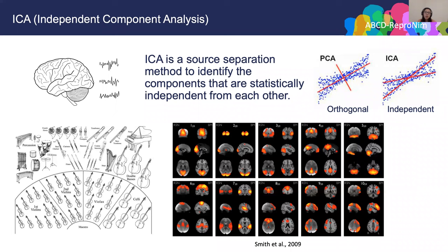Let's start with independent component analysis, ICA. More than 15 years ago, when resting-state fMRI started to arise in neuroimaging, ICA was selected as a method to reduce the dimension of the data and identify brain networks. ICA is a method designed for separating signal sources. Resting-state fMRI measures brain oscillations where participants lie in the scanner not performing any specific task — but during this time, the brain is not doing nothing. Instead, it oscillates like an orchestra playing a symphony.